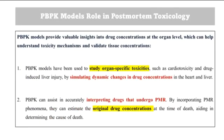The physiologically based pharmacokinetic model's role in post-mortem toxicology provides valuable insights into drug concentrations at the organ level, which can help understand toxicity mechanisms and validate tissue concentrations. For example, they have been used to study organ-specific toxicity such as cardiotoxicity and drug-induced liver injury by simulating dynamic changes in drug concentrations in the heart and liver. They can also assist in accurately interpreting drugs that undergo post-mortem redistribution — by incorporating the post-mortem redistribution phenomena, they can estimate the original drug concentrations at the time of death, aiding in determining the cause of death.